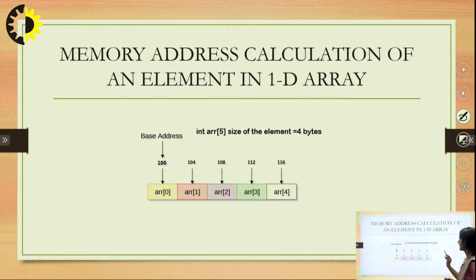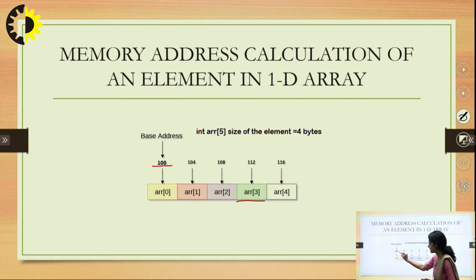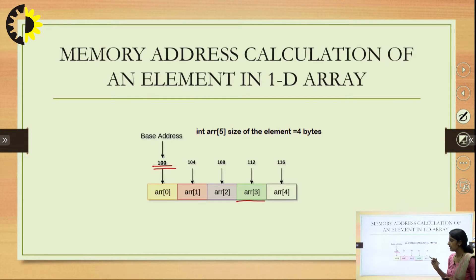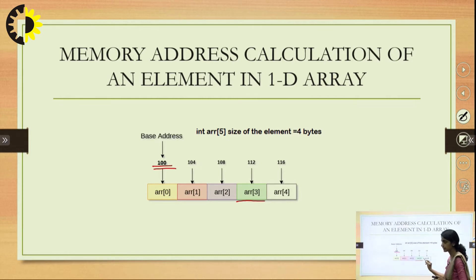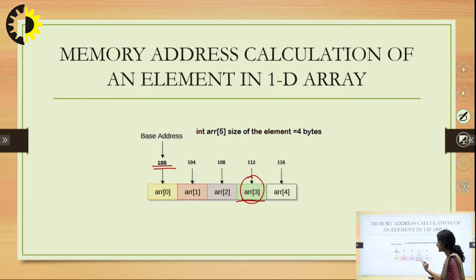For memory address calculation of an element in a 1-dimensional array, suppose we have to calculate the memory address of a particular element. We know the base address — the address location of the first element in the array. We have to calculate address of a[3]. Initially, we find how many elements are present before a[3] using the index. The index is 3, and we compute 3 minus the lower bound of the index.